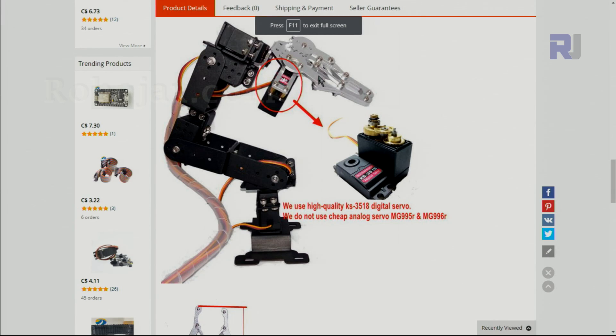This robotic arm uses servo for the hand grip. You can see here one servo, another servo, another servo, another servo to rotate this robotic arm in different directions - up and down, left to right - in six different directions.